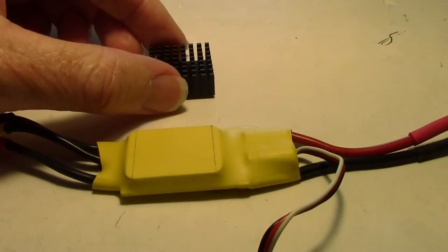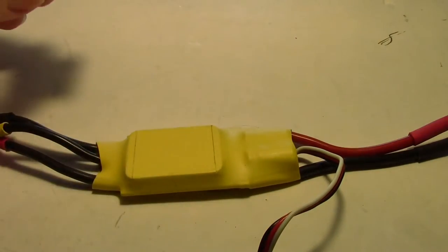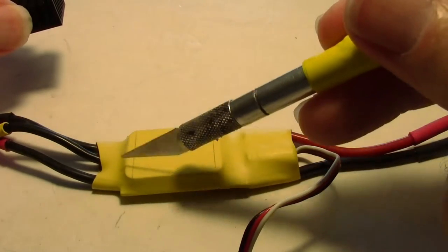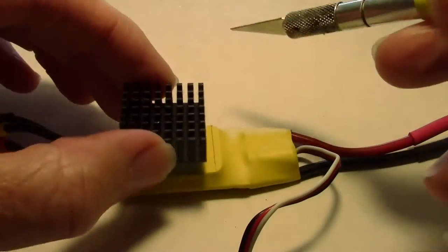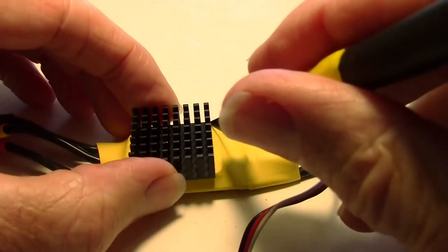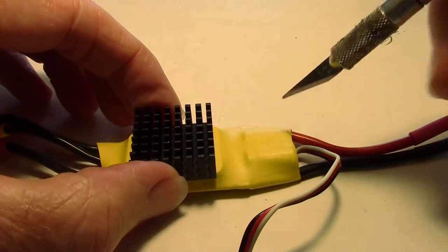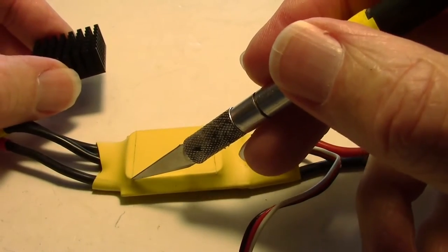Okay, so now we're working on putting the heat sink on to the ESC. You find the side that's got the metal plate underneath the heat shrink here. And then I've just cut a line on each side with the exacto, like that.